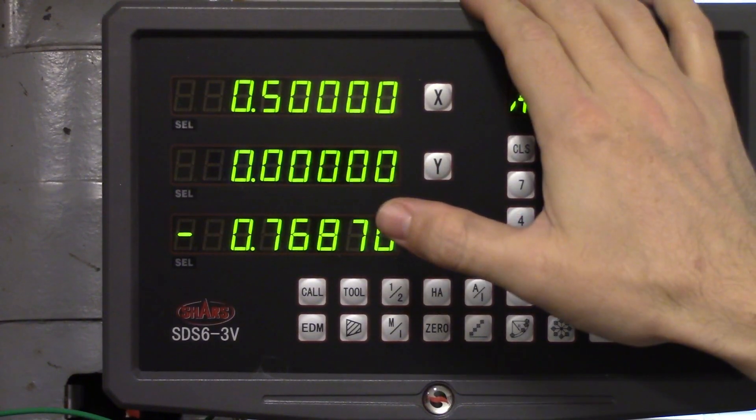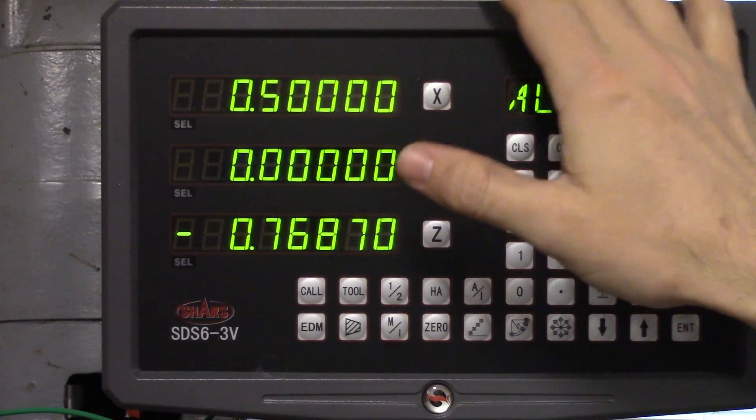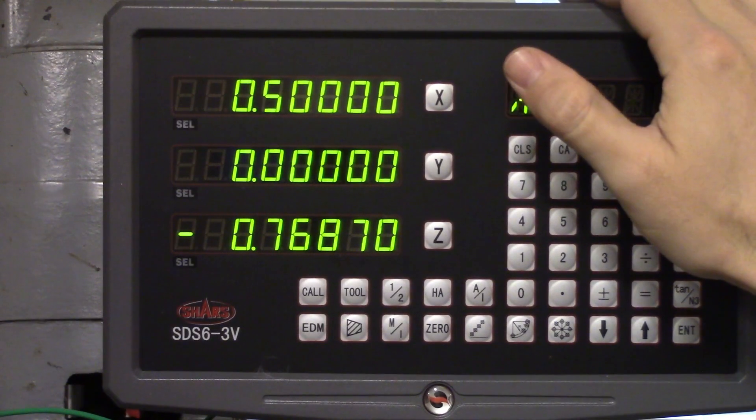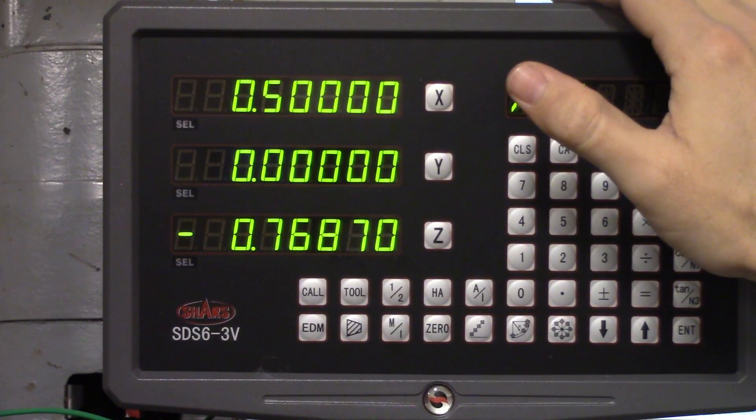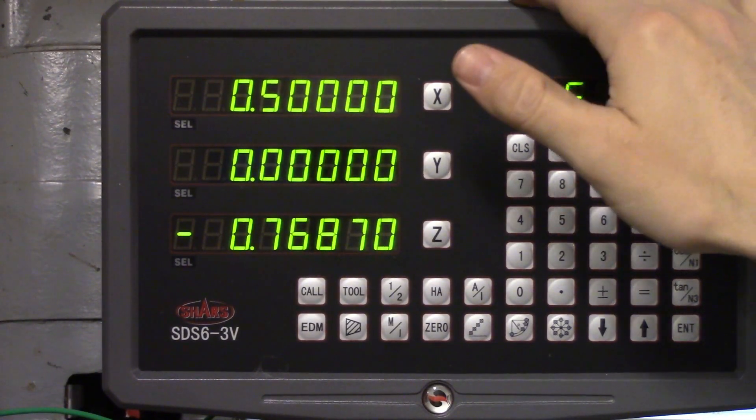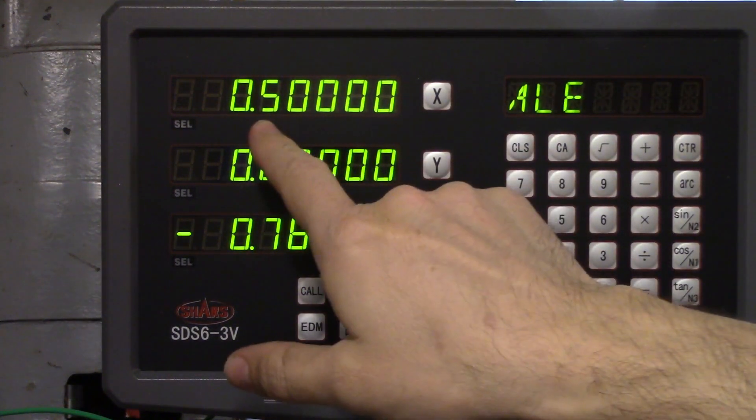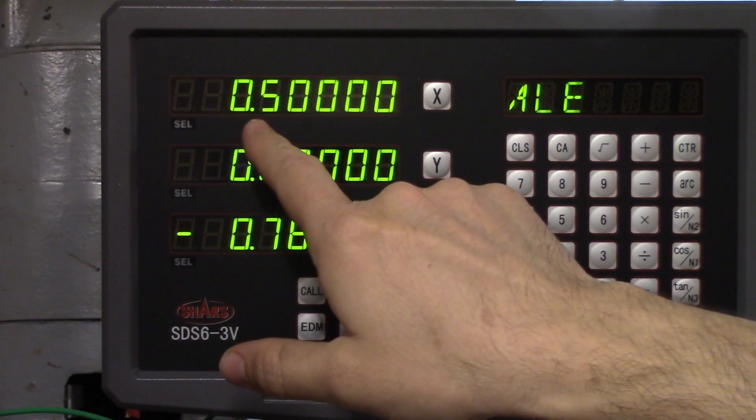This can be really confusing for beginners in either system of measurements since the print usually just shows measurements to thousandths of an inch or hundredths of a millimeter. If you need to move five hundred thousandths of an inch or .500 inches, make sure the five is right after the decimal point.